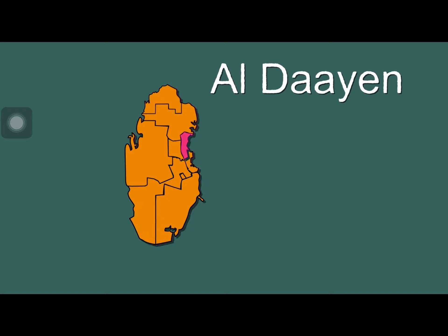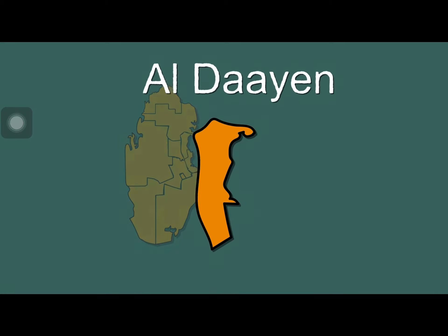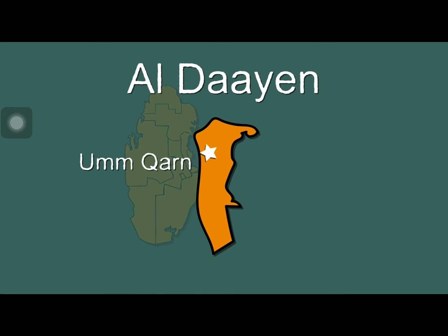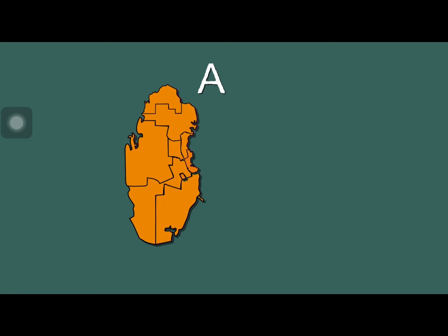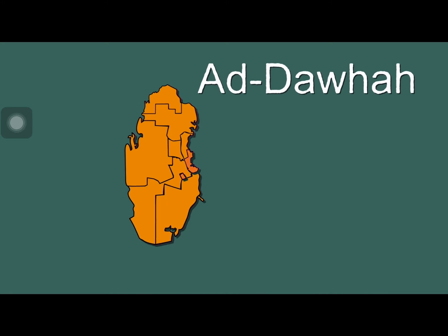Al Dayan is my name, I touch the Persian Gulf. Samisma Beach, it has the most. Umm Qatar is my capital, shown here underneath the star that just appeared.